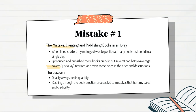The number one mistake I made when I started publishing books on Amazon was creating and publishing books in a hurry. When I first started, my goal was to publish as many books as I could in a single day. I was publishing low content books and was creating at least five covers per day. I produced and published more books quickly, but several had below average covers, just okay interiors, and even some typos in the titles and descriptions.